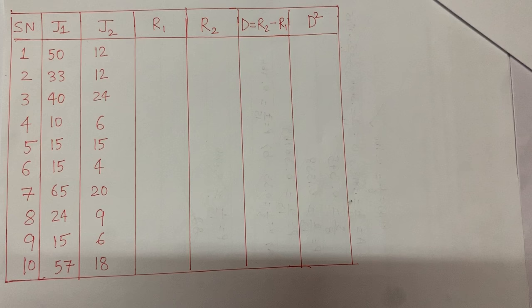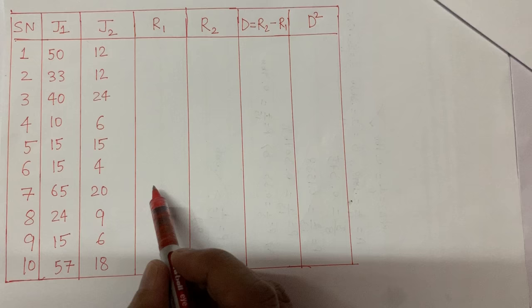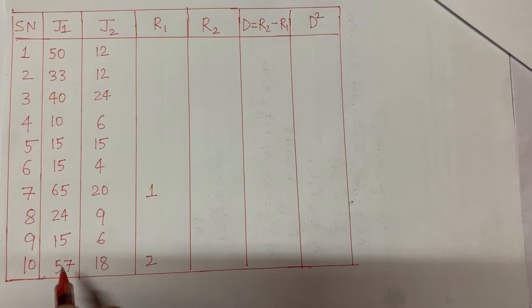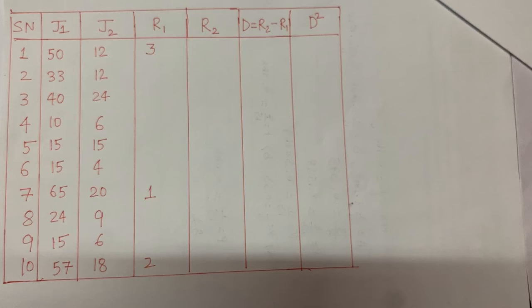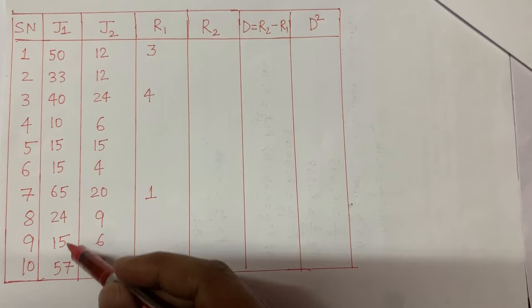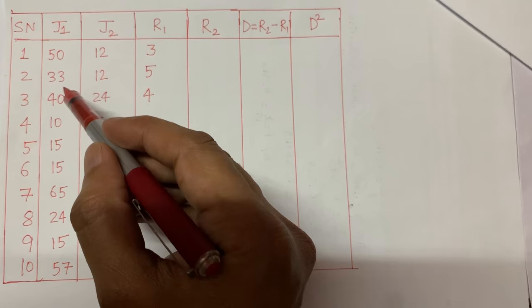As I discussed in my first video, my strategy is always that the highest number gets the lowest rank. So the first step is to allot ranks. R1 represents ranks for judge one's scores. The highest number is 65, so it gets rank 1. The second highest is 57, given rank 2. Then 50 is given rank 3, 40 gets rank 4, and 33 gets rank 5.